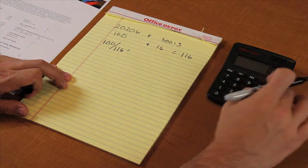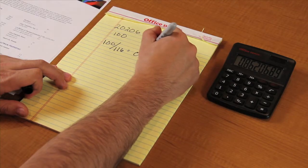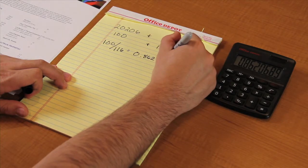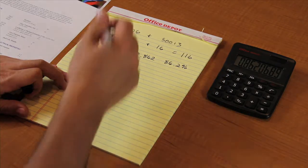To calculate how much material to add, let's convert this number to a percentage of the whole. The 20206 is 100 out of 116 total units. That gives us a percentage of 86.2%.